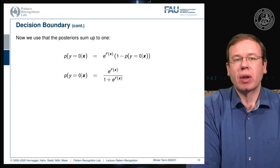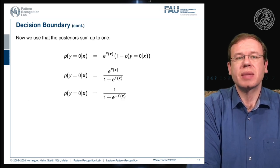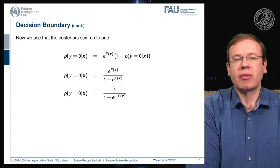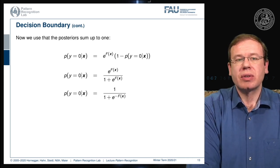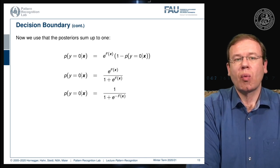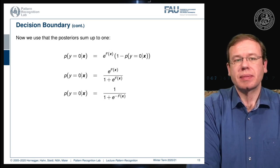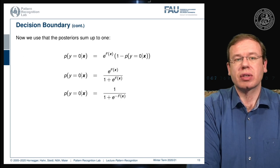This gives us a solution where we are already pretty close to our logistic function. We can rearrange this simply by dividing everything by e to the power of F(x), and then you see that the only thing that remains is one over one plus e to the minus F(x) — and this is nothing else than our logistic function.